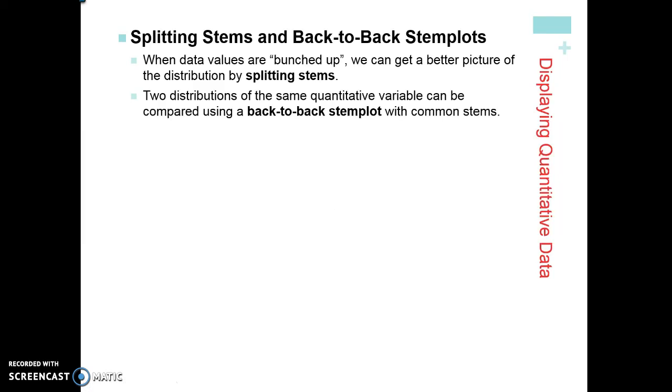When data values are bunched up, sometimes we can actually get a better picture of the distribution by splitting the stems. So what does that mean to split the stems? Two distributions of the same quantitative variable can be compared using back-to-back stem plots with a common stem. This is basically when data is bunched up. So these are two different things. This is sort of having two ones and then having your leaves coming off of the two different ones with a back-to-back stem plot. The stem is in the middle and then there's two different distributions on the right and on the left hand side.